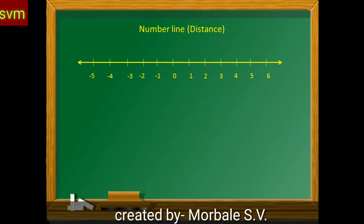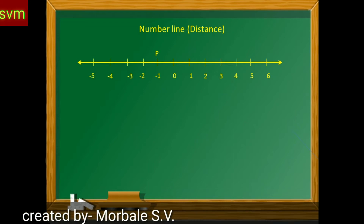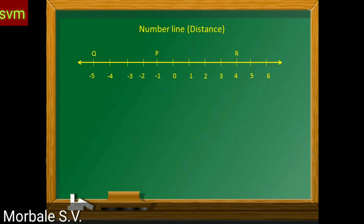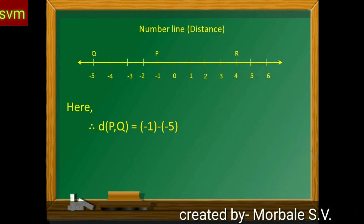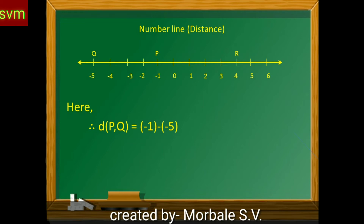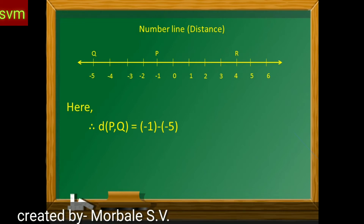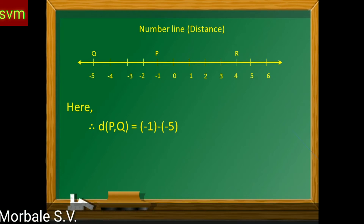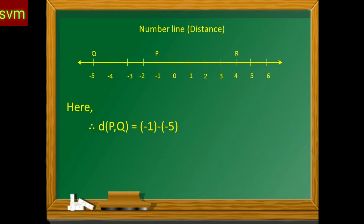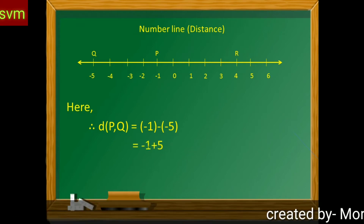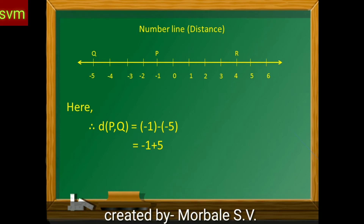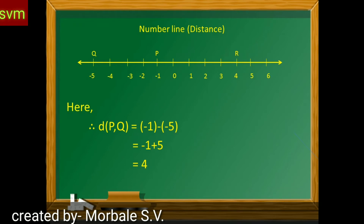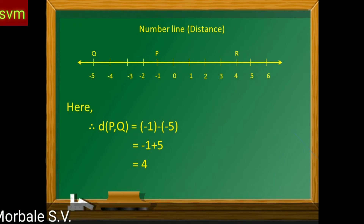Distance between two points. See there — point P, point Q, and point R. Distance between two points: distance PQ is equal to coordinate of P which is minus 1, coordinate of Q which is minus 5. Then distance between P and Q is equal to minus 1 minus (minus 5), which equals plus 5 minus 1, which is equal to 4. So distance PQ equals 4.